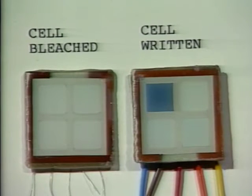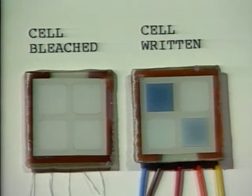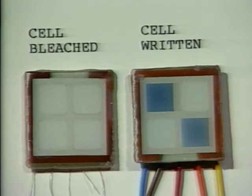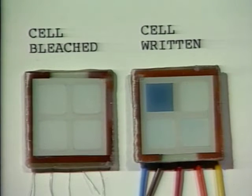We can demonstrate the grayscale by writing one of the cells with a small amount of lithium, then a little bit more charge, a little bit more charge, a little bit more charge. Now I've left it alone, and it stays as it is. Now I can remove some of the lithium, or remove it all, and it reverts back to its initial state.